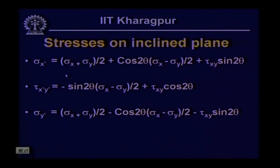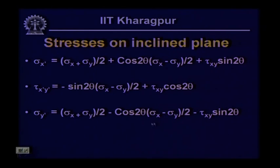Sigma x dashed is given as: sigma x plus sigma y divided by 2, plus sigma x minus sigma y divided by 2 times cos 2 theta, plus tau xy sin 2 theta. The shearing stress tau x dashed y dashed equals minus sigma x minus sigma y divided by 2 times sin 2 theta, plus tau xy cos 2 theta. The normal stress on the perpendicular plane is sigma x plus sigma y by 2 minus sigma x minus sigma y by 2 cos 2 theta minus tau xy sin 2 theta. Eventually, sigma x dashed plus sigma y dashed equals sigma x plus sigma y, giving us the first stress invariant.